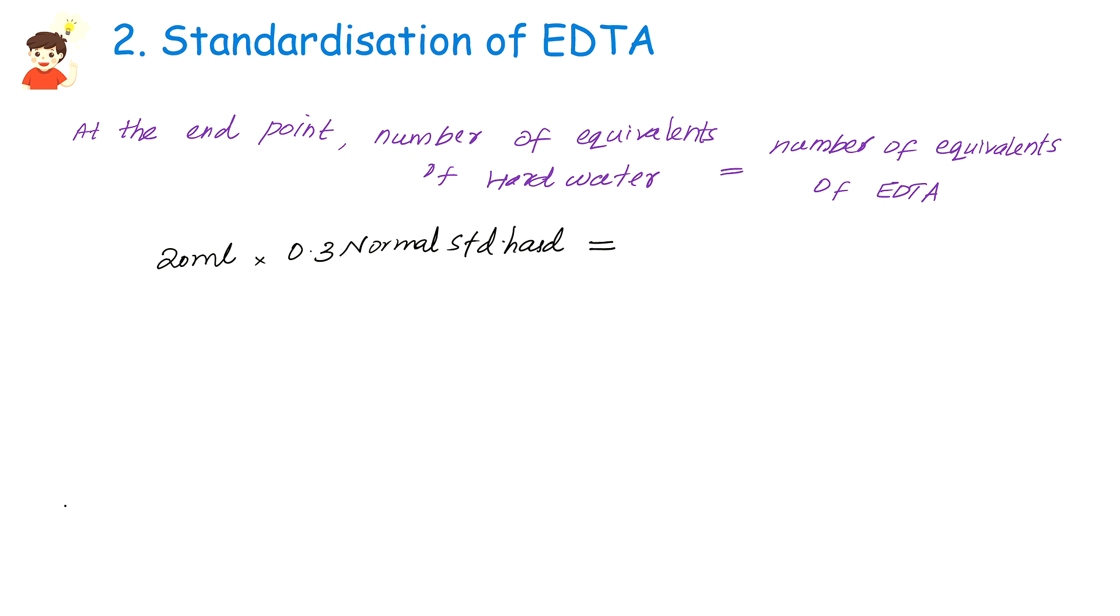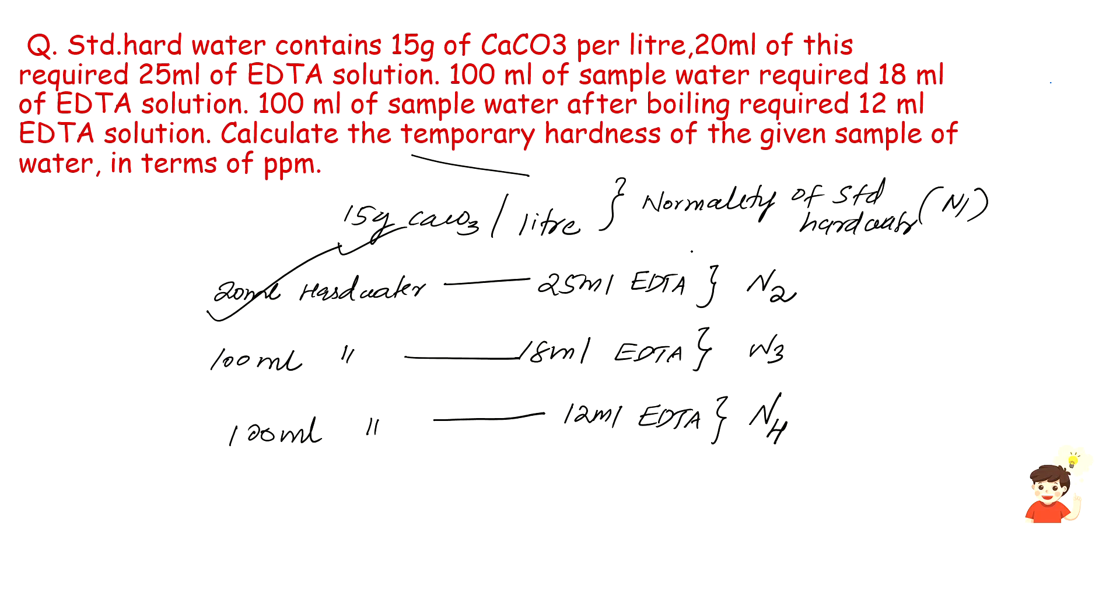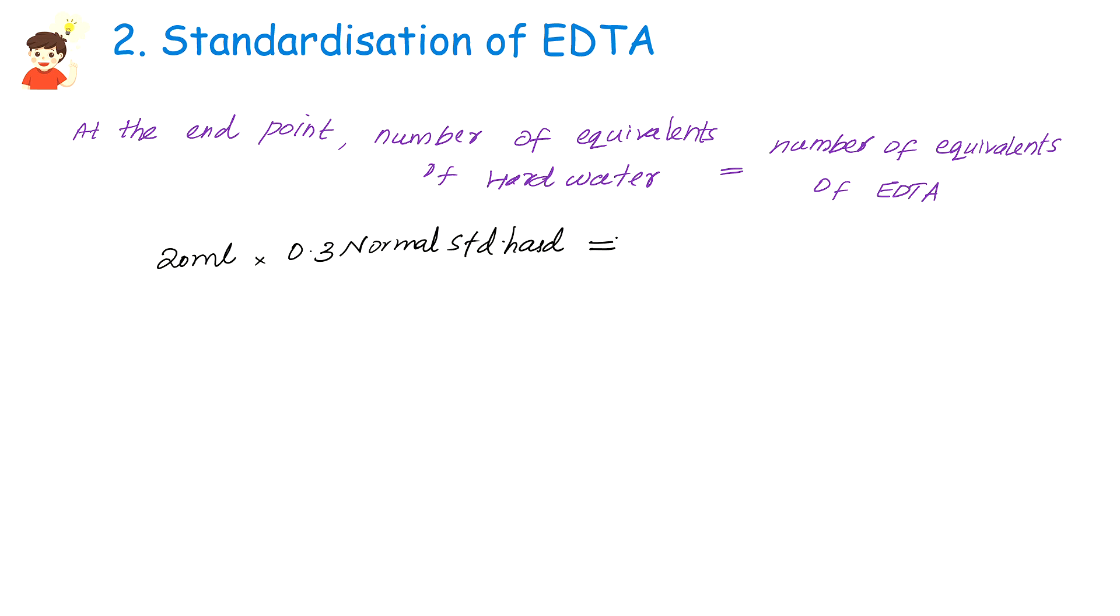That is equivalent to 25ml times N2. N2 means EDTA normality. Therefore, N2 equal to 20 times 0.3 divided by 25. If you do it, you get around 0.24 normal. That is normality of standard EDTA.